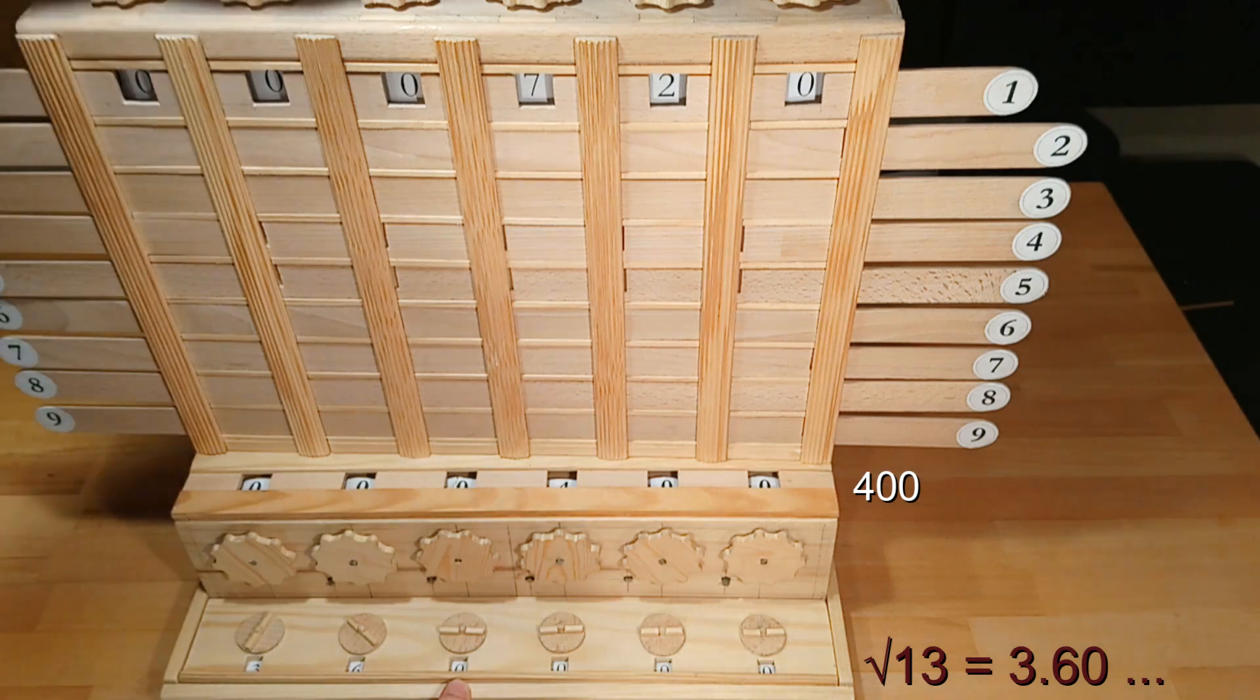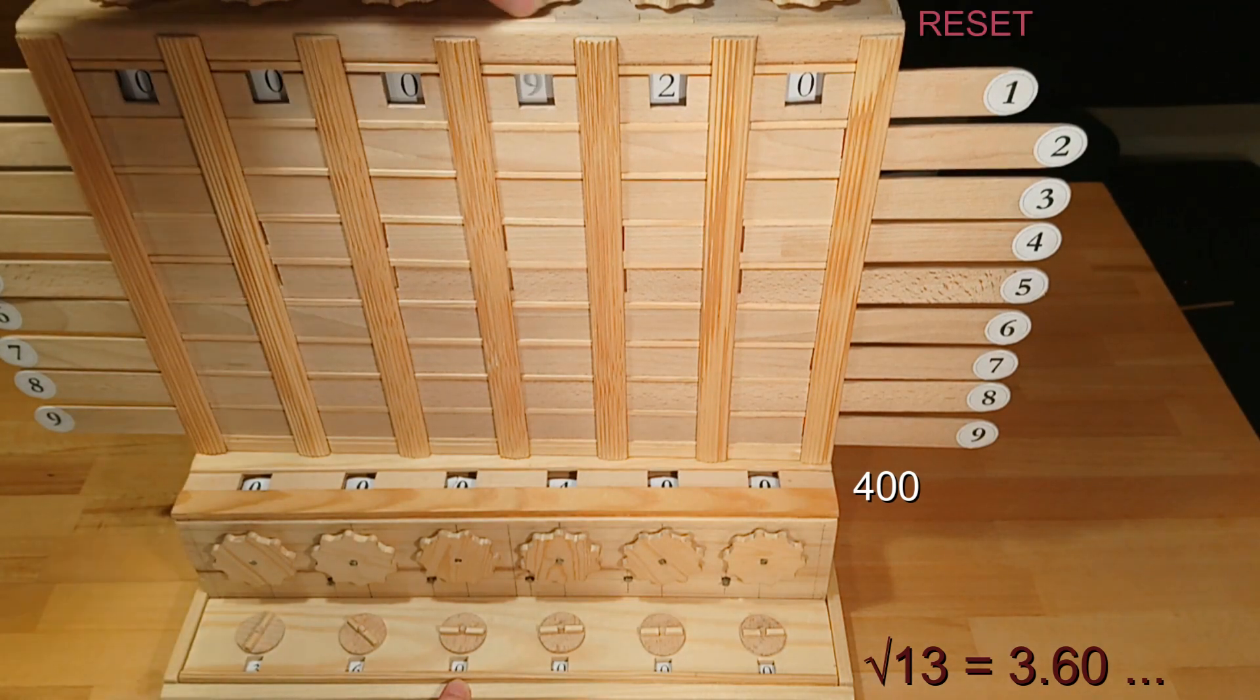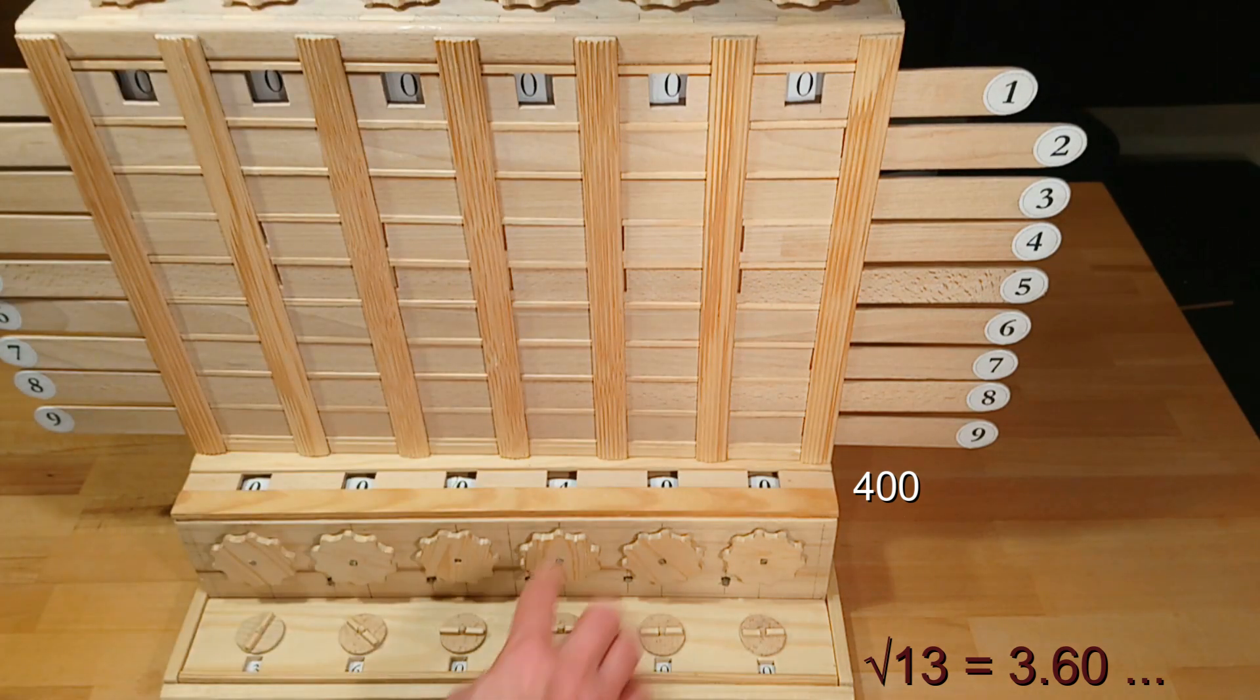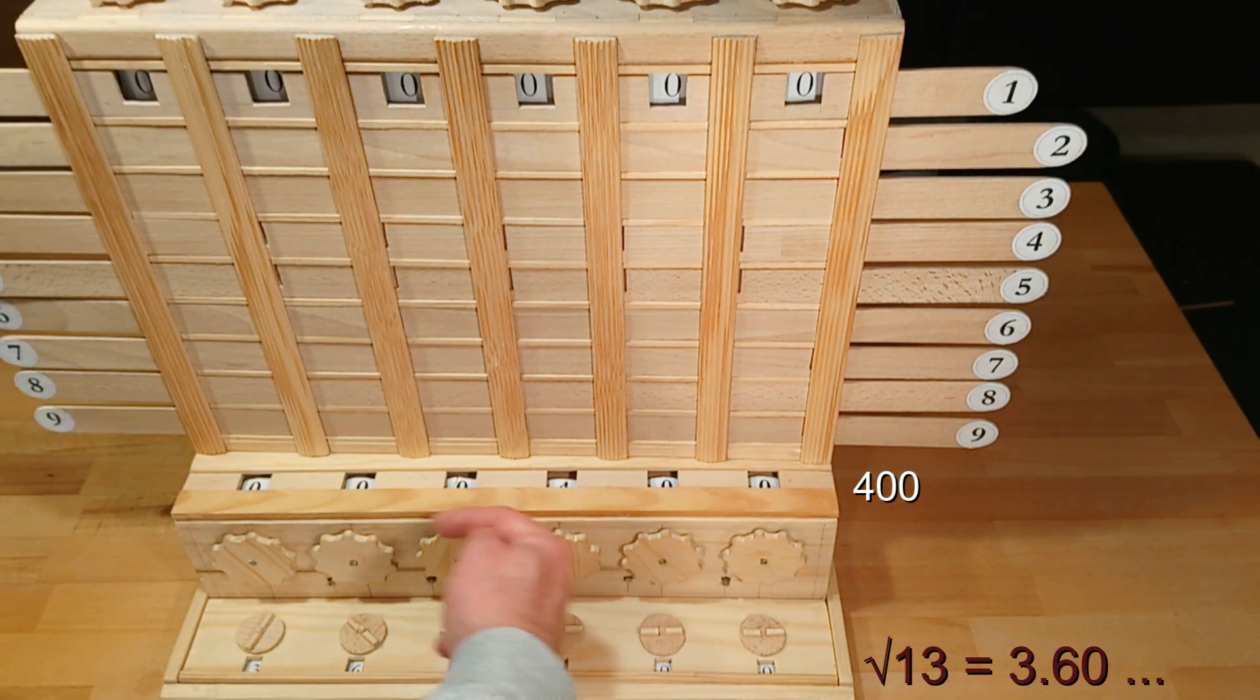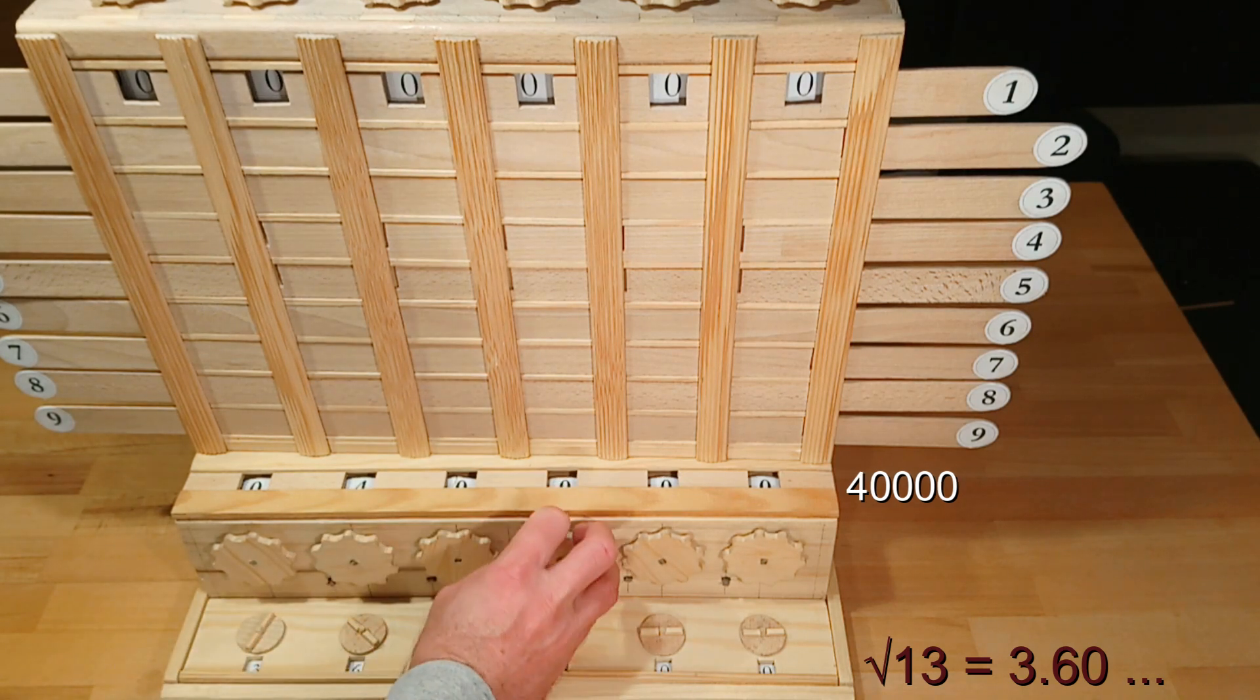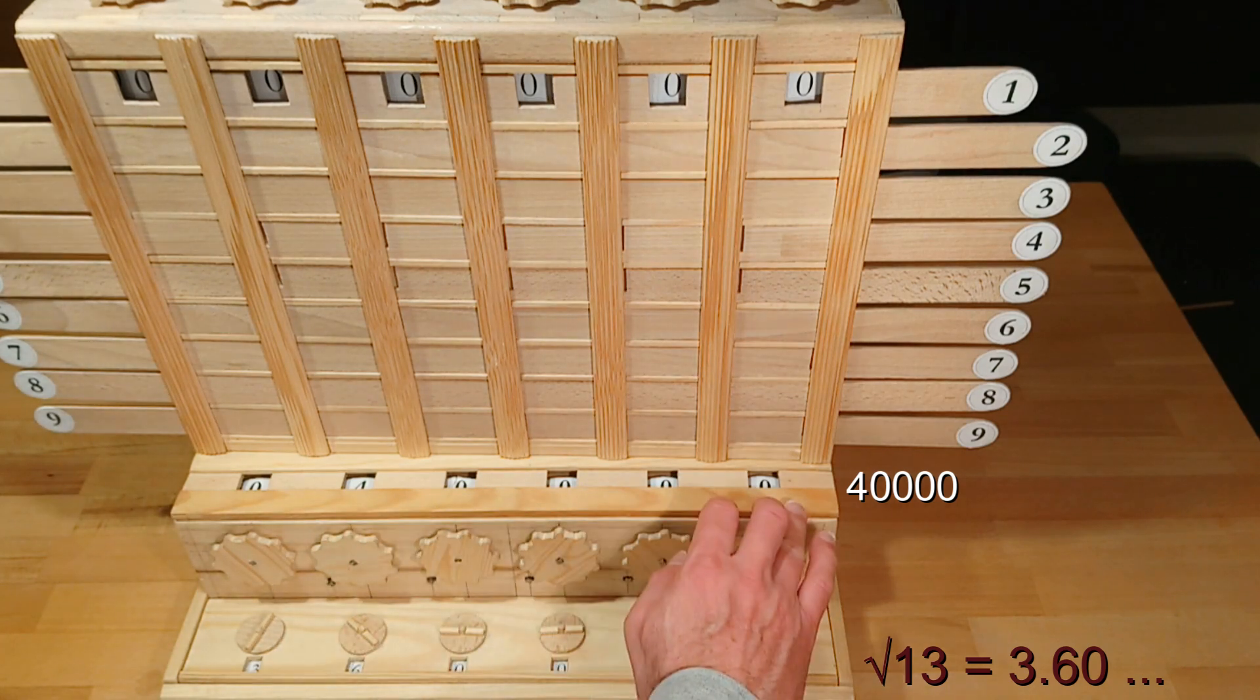Because of the 0 we don't have to subtract anything from the number in the adder. And I'm resetting the multiplier back to 0. Now we have to shift 402 places to the left in the adder for the calculation of the next decimal place. And now we have 40,000 in the adder.